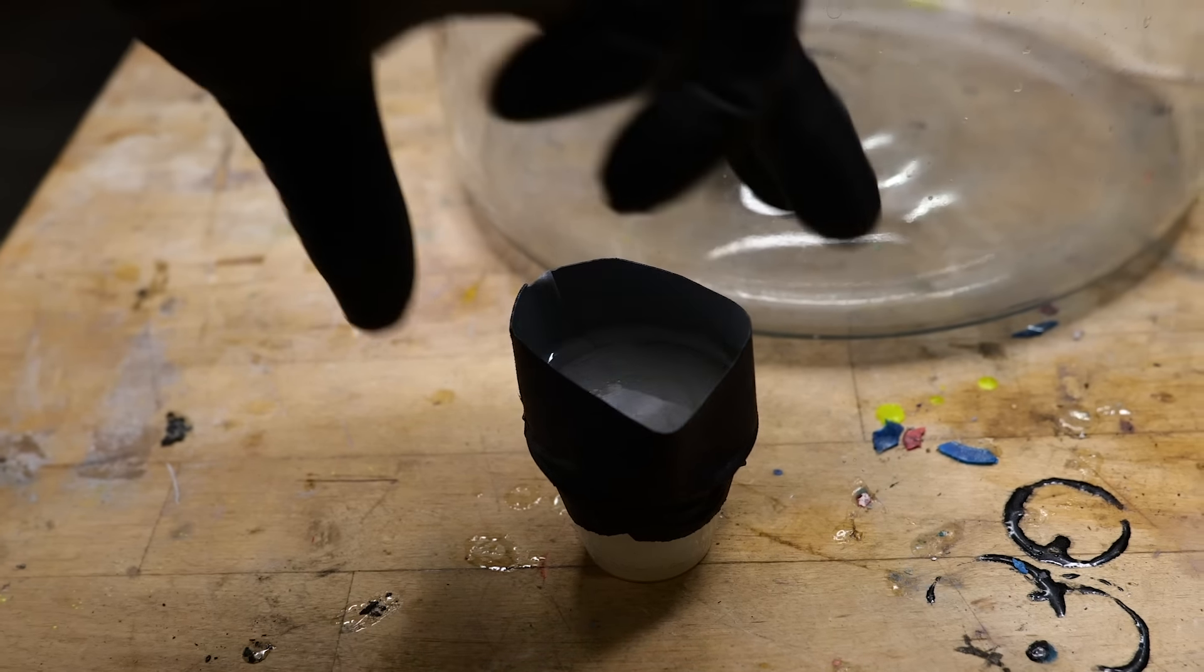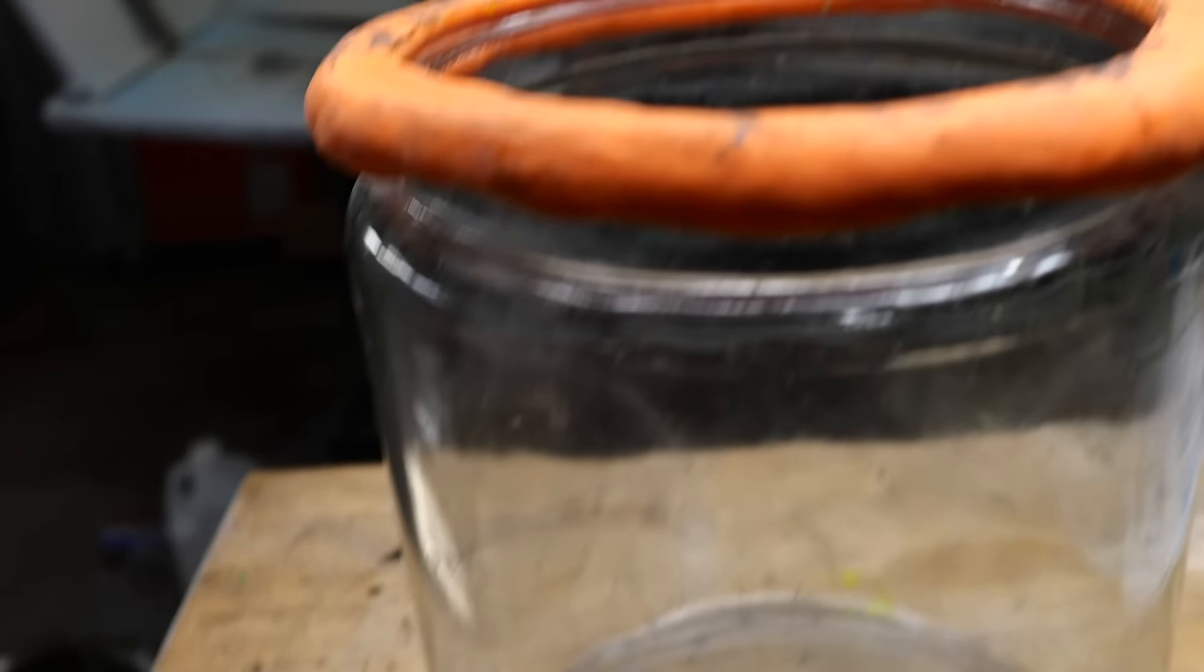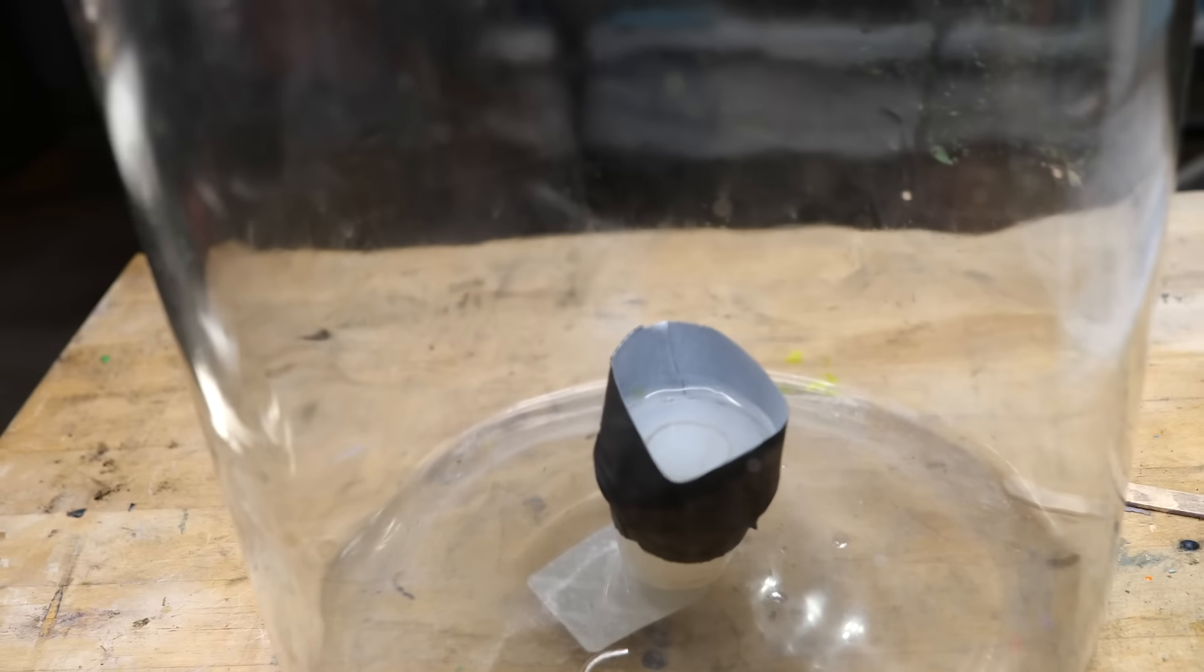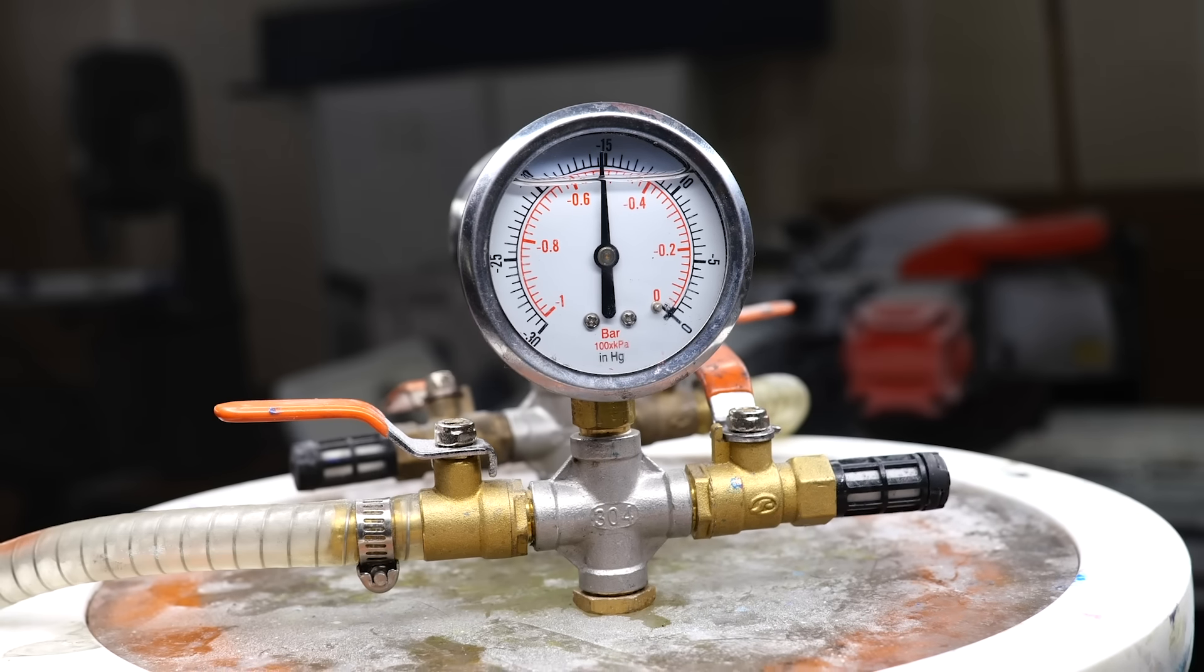We just need to put this in the vacuum, that way the resin will seep perfectly down into the recess of the ring blank. That will get rid of all of the bubbles and make sure that the resin is able to fill down into the mold perfectly.